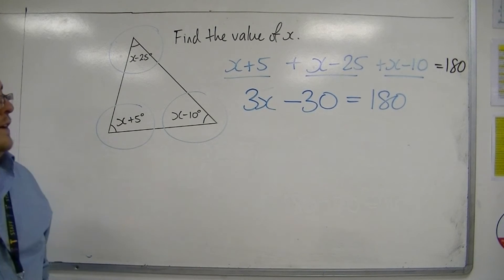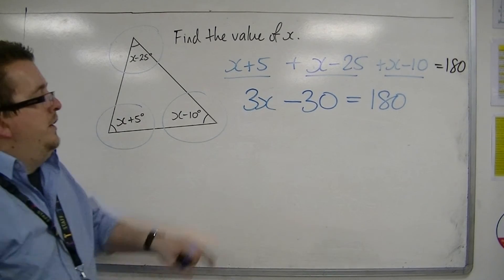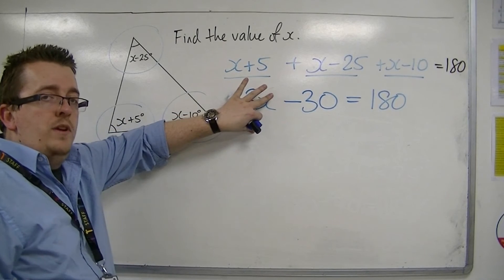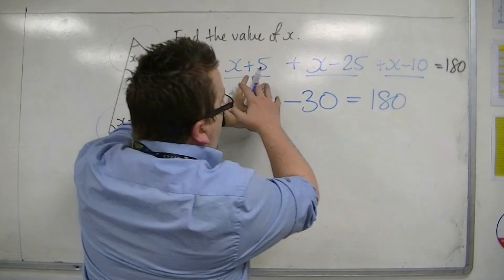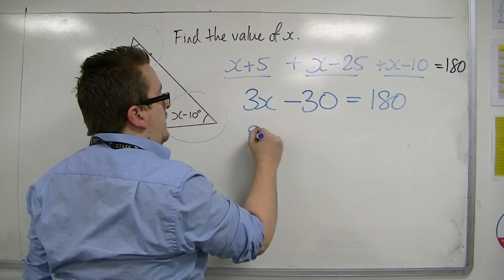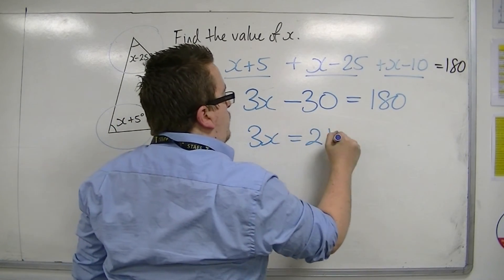So if something take away 30 is 180, well, that would have to be 210. 210 take away 30 is 180. So 3x is 210.